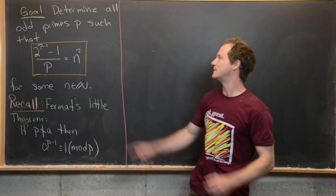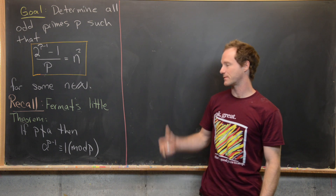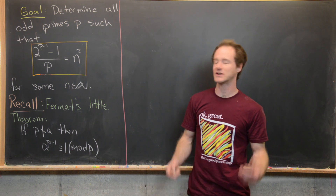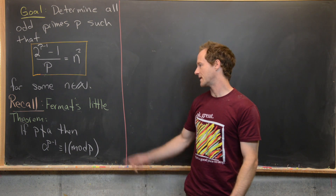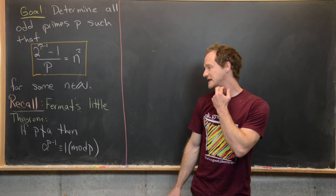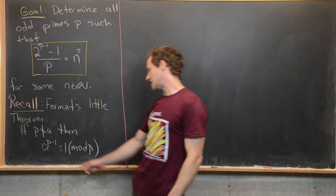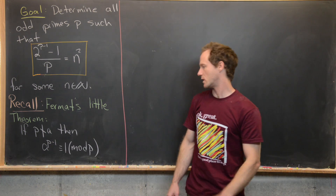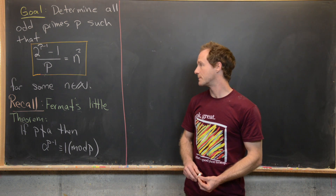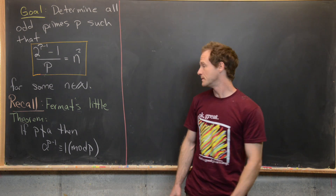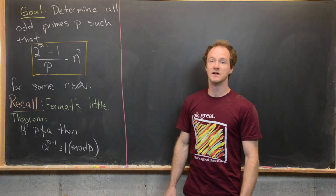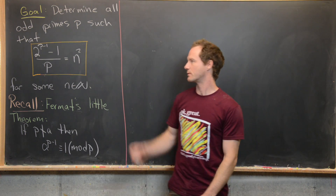We need p to be an odd prime because that sets up this application of Fermat's little theorem. A priori we do not know that the left-hand side is even a natural number, but Fermat's little theorem tells us that. If p does not divide a, then a^(p-1) ≡ 1 mod p, which means a^(p-1) - 1 is a multiple of p, so you can divide by p and still have a natural number. This would not work if the prime were 2, because then you could not ensure a natural number on the right-hand side.